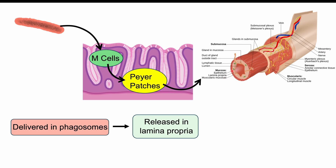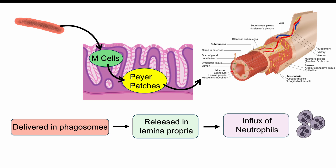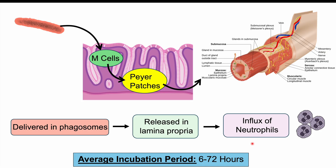The bacteria crosses through the epithelium, enters into the lamina propria, and is released there, causing immune cell responses. We start to get an influx of neutrophils — white blood cells that often deal with bacteria. All of this leads to inflammation in the gastrointestinal system and causes symptoms.